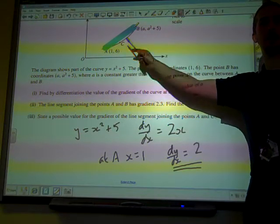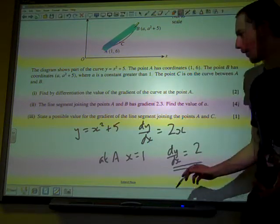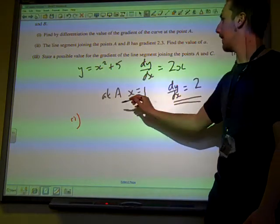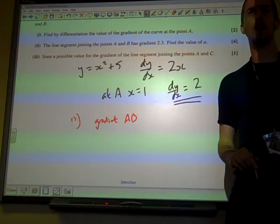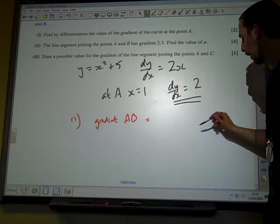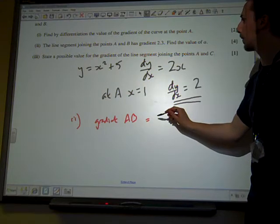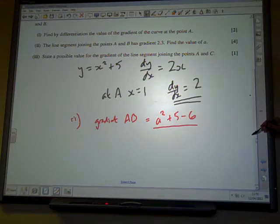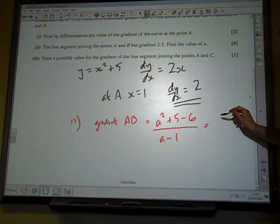We've got the values at the start and end of it, and we know how to find the gradient of a straight line. For part (ii), the gradient - remember gradient of a line is change in y over change in x - so that is the change in y, a² + 5 - 6, divided by the change in x, that's a - 1, equals 2.3.